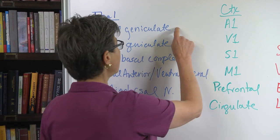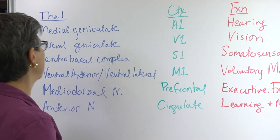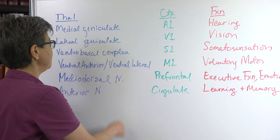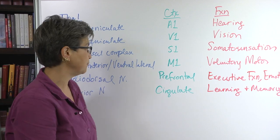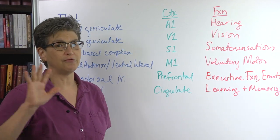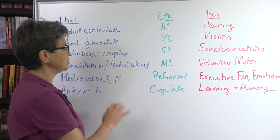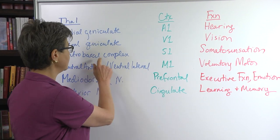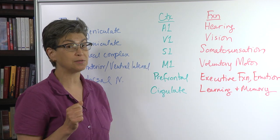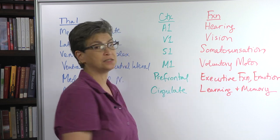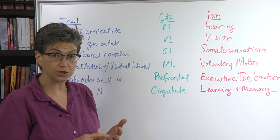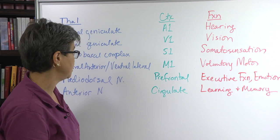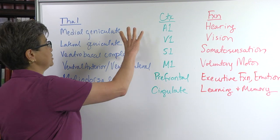So medial geniculate to auditory cortex is responsible for hearing. Lateral geniculate goes to primary visual cortex V1, responsible for vision. Same thing for ventrobasal complex, which also is called - these thalamic nuclei have hideous names - ventral posterior lateral and ventral posterior medial. We're going to call them collectively the ventrobasal complex. This goes to primary somatosensory cortex, responsible for all of somatosensation - not just light touch and vibration, but also pain and temperature.